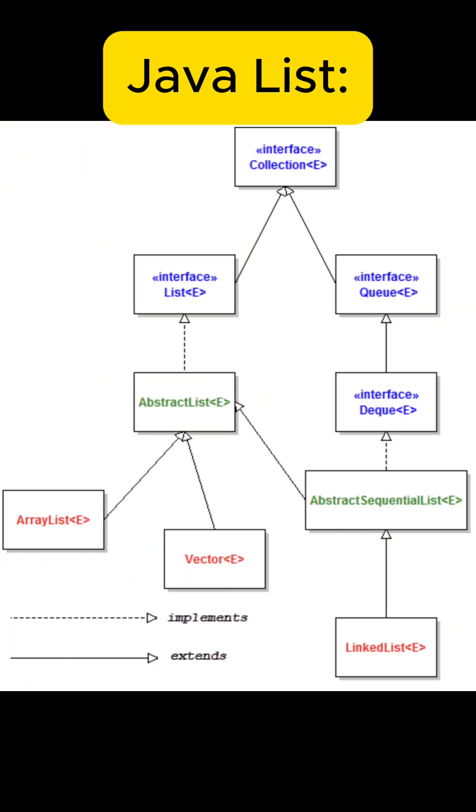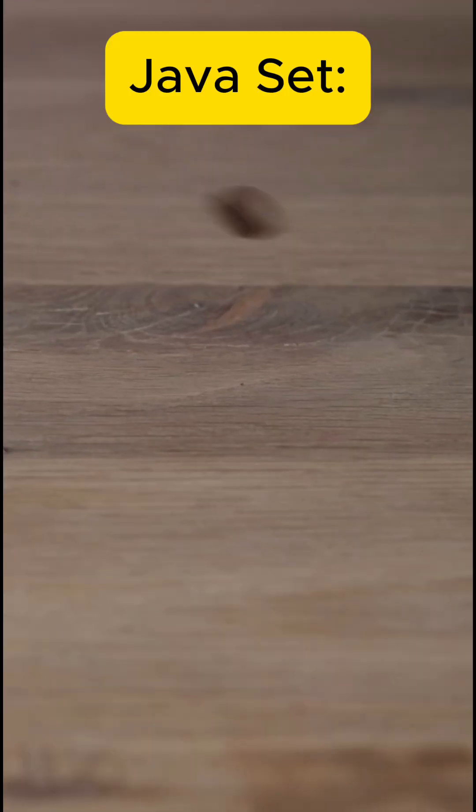Popular list types include ArrayList, LinkedList, and Vector. Next, set.